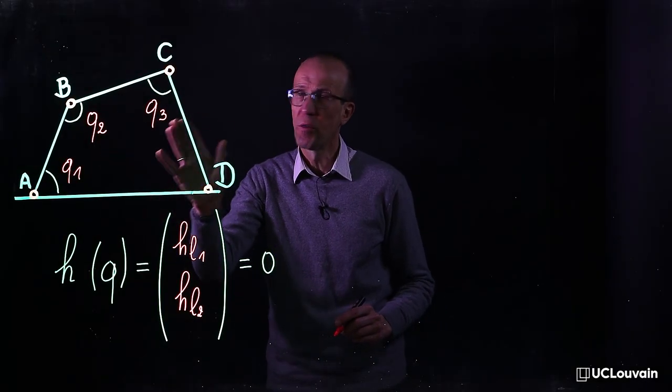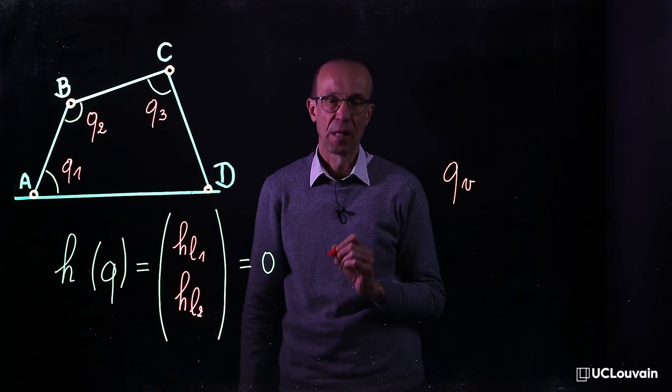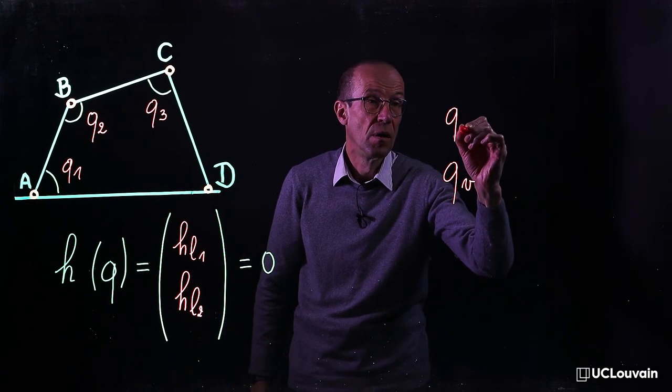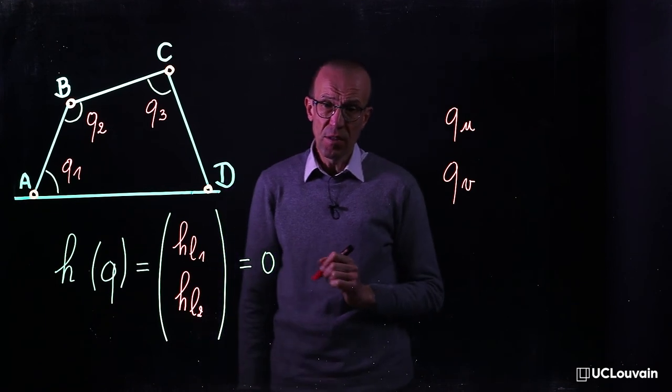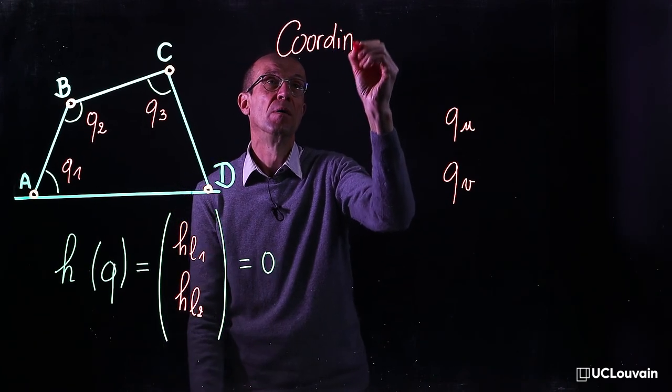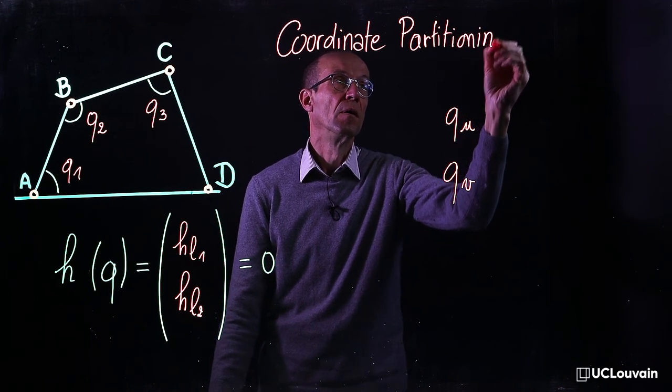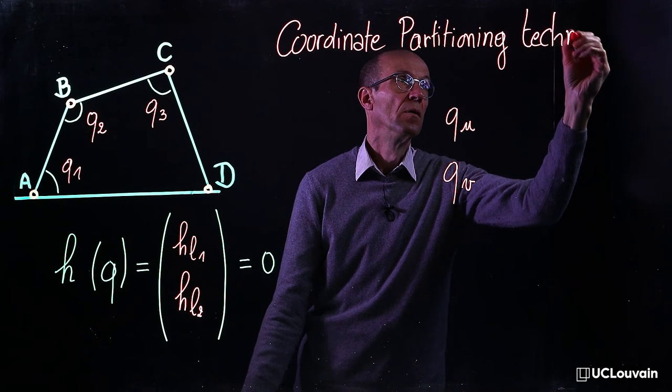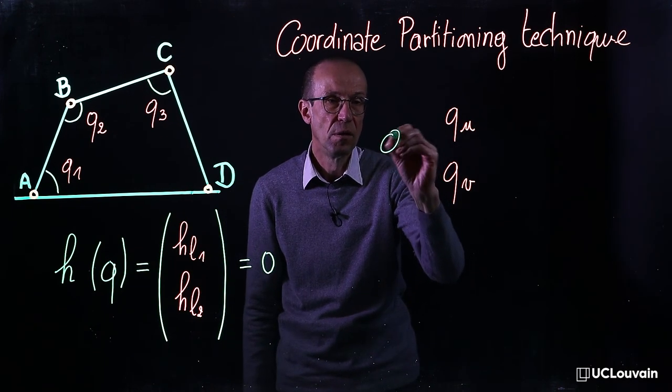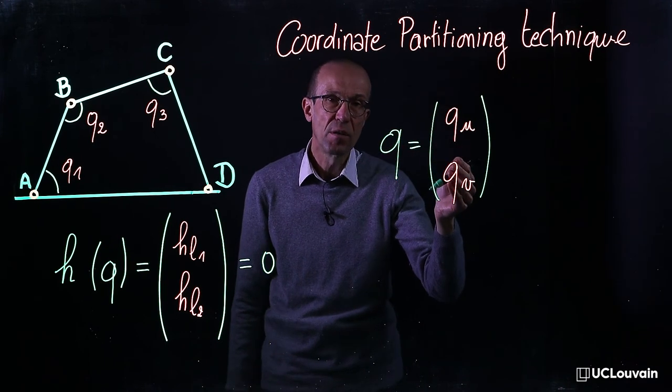Coordinates q2 and q3 will be referred to as dependent coordinates and denoted qv, whereas q1 will be denoted as the independent coordinates and denoted qu. This allows to introduce the so-called coordinate partitioning technique,